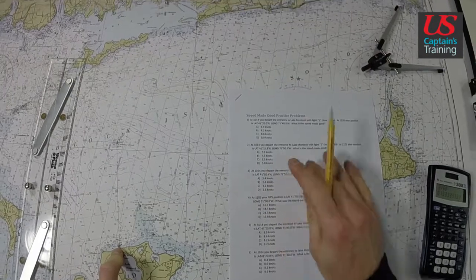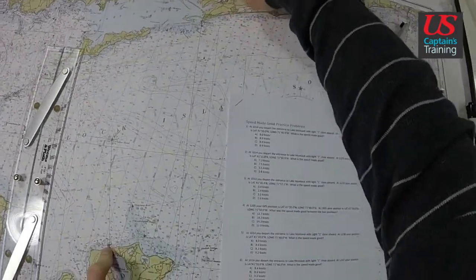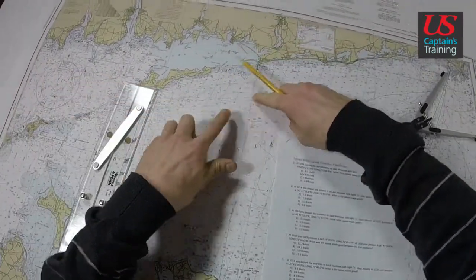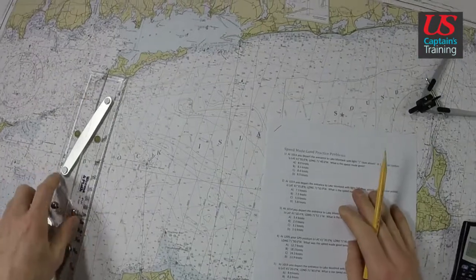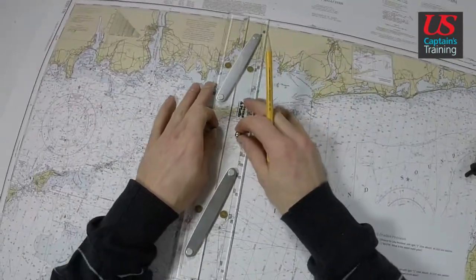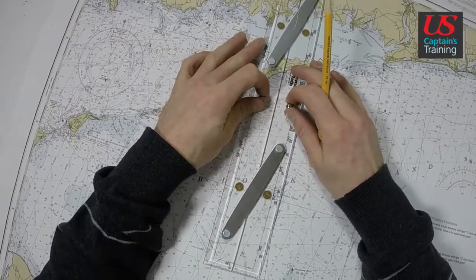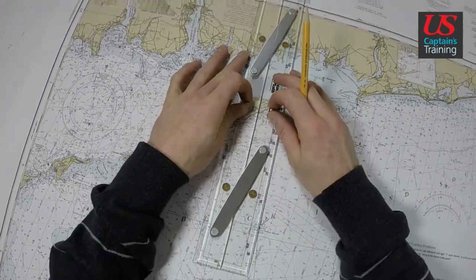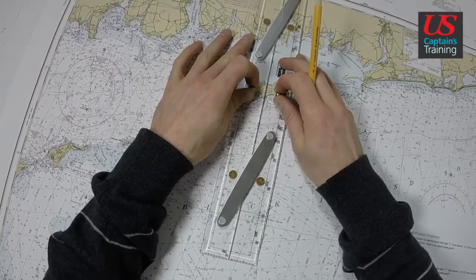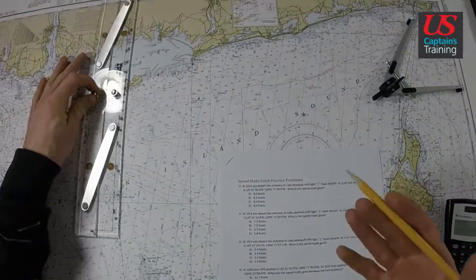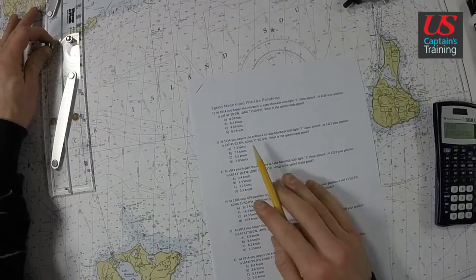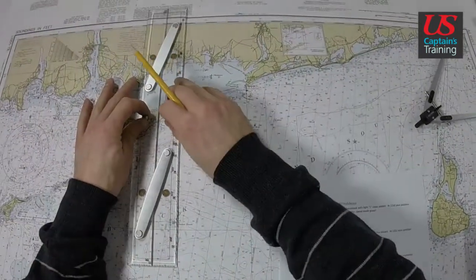41.15.8, 71.50.9, and 41.15.8 we're going to be right up in here somewhere. So I'm going to get my longitude with the parallel rules and my latitude with the dividers. One of them, either longitude or latitude, is usually easier to get with your dividers. And in this case it's going to be longitude, which is 71.50.9.